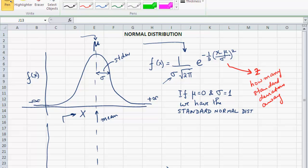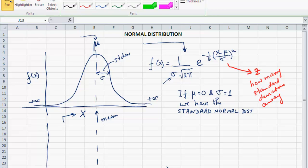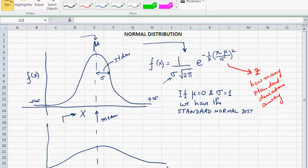If sigma were to increase, then this curve would tend to get shorter and fatter. So it's spread out a little bit more. It tends to get fatter as the standard deviation increases. If the standard deviation or the spread decreases, then the curve gets more peaked and narrower.